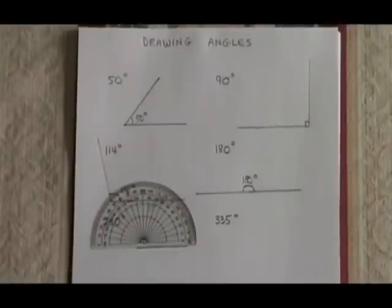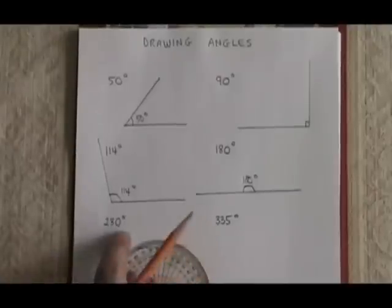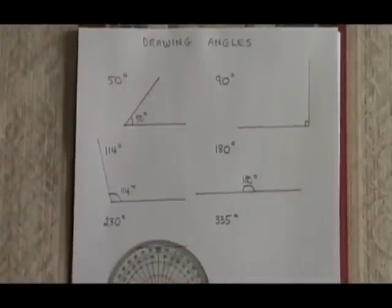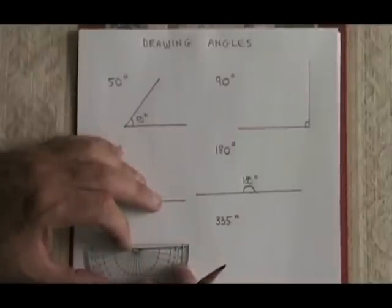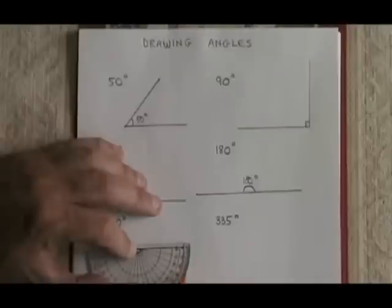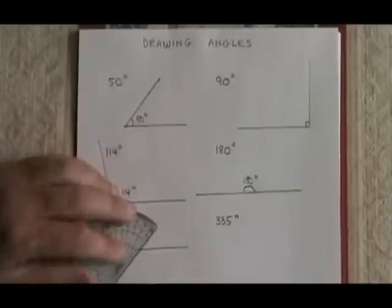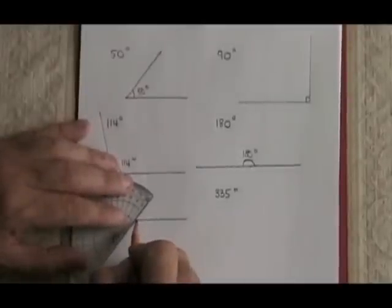So what we can do is say 360 degrees minus 230 is equal to 130. Let's try drawing a 130-degree angle underneath our starting line. Counting from zero, 130 is over here. I put a dot. I draw a line connecting my vertex to that dot.